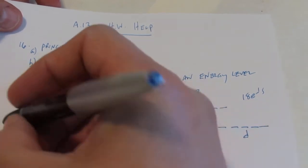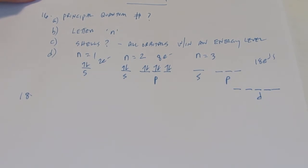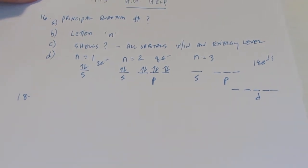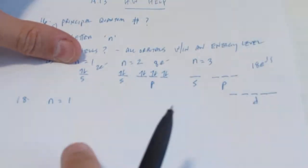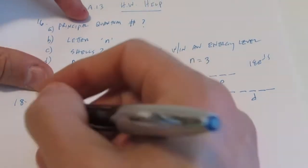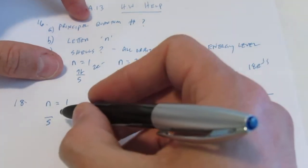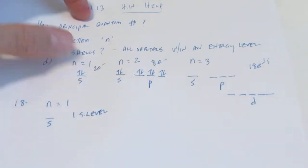The next question is question eighteen on your homework. And that says, for each of the following values of N, identify the number and types of sublevels possible. And it says hint, see table number two. So when N equals one, it wants the number and type of sublevels. So when N equals one, remember we can have an S sublevel. So I can only have one sublevel and it's an S.